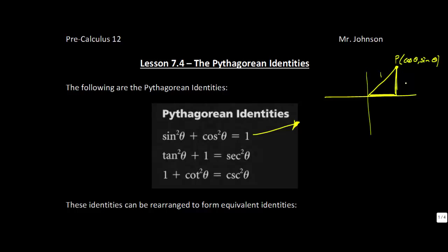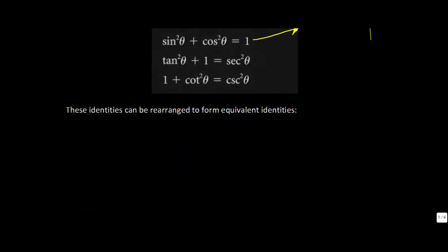So that is where these identities come from. What we're going to be doing in this lesson is very similar to the previous lesson — using these three identities to work with some different proofs.